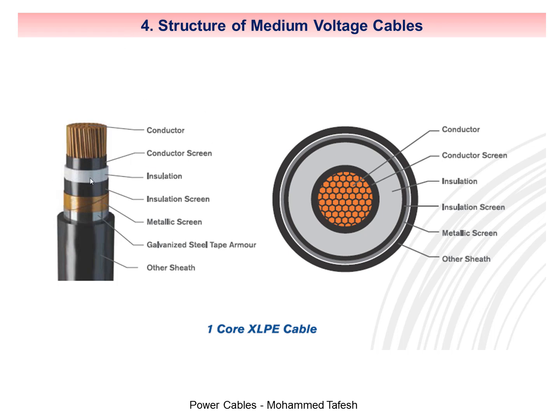The third layer, and the most important layer in the cable, is XLPE insulation — cross-linked polyethylene. Its function is to isolate the conductors from each other and isolate the cable layers from one another. Its purpose is to withstand the operating voltage and withstand the largest electrical voltage expected between the cable layers.